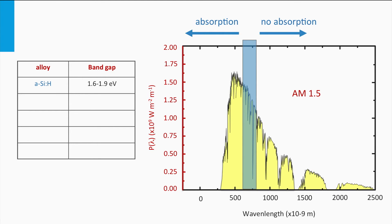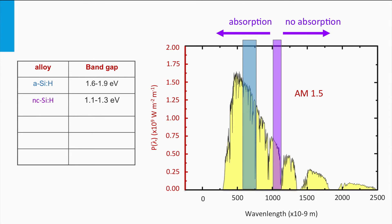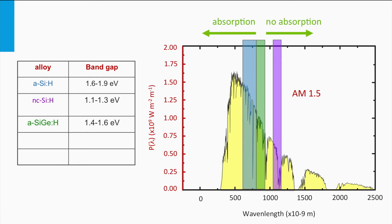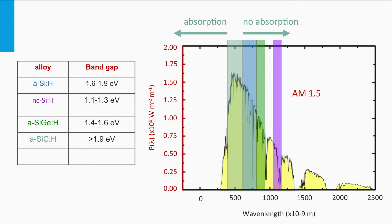Hydrogenated amorphous silicon has a bandgap in the order of 1.6 to 1.9 eV, which can be tuned by the amount of hydrogen incorporated into the silicon network. Nanocrystalline silicon has a bandgap in the range of 1.1 to 1.3 eV. Hydrogenated amorphous silicon-germanium alloys can have bandgaps in the range of 1.4 to 1.6 eV. Amorphous silicon carbide can have bandgaps of 1.9 eV and higher, while nanocrystalline silicon oxides have bandgaps larger than 2 eV.